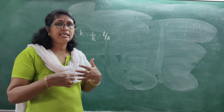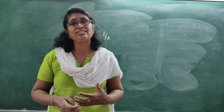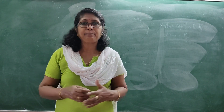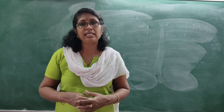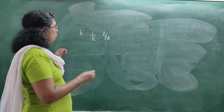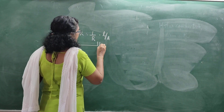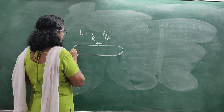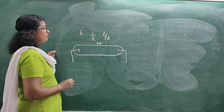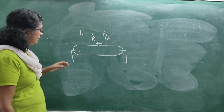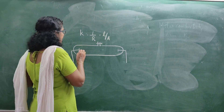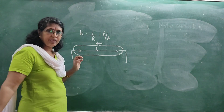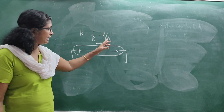For conductivity of solutions, we cannot directly connect a solution in a circuit. So we take the solution whose conductivity is to be measured in a special type of cell called the conductivity cell. This cell has two platinum electrodes coated with platinum black. The length L is taken as the distance between the two electrodes, and the area A is the area of cross section of the electrodes.